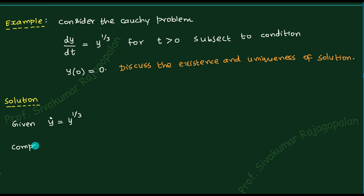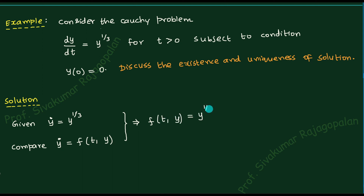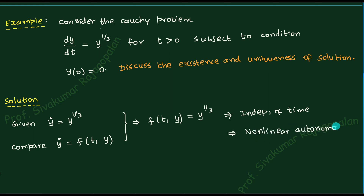Comparing with the standard equation, the right-hand side function f(t, y) should be equal to y^(1/3). Although this is a function of t and y, t does not appear, which means this is an autonomous differential equation. Also, since the exponent is 1/3 rather than 1, this is a non-linear autonomous differential equation.